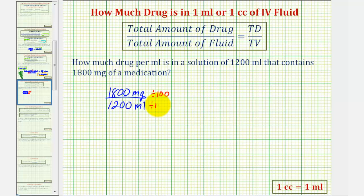To simplify this first, this would be 18 milligrams per 12 milliliters.